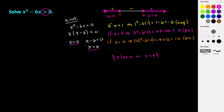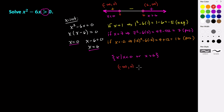If we look at this in interval notation, this would be from negative infinity up to 0, or from 6 all the way to infinity. So in interval notation: negative infinity to 0 union 6 to infinity. That is our solution set.